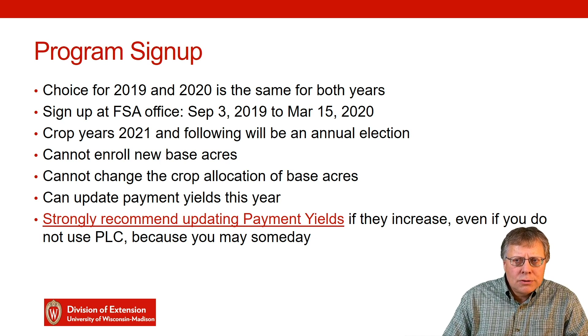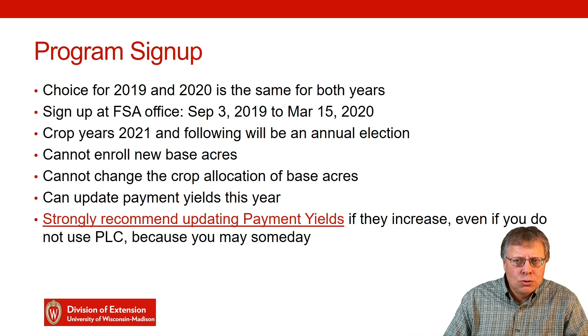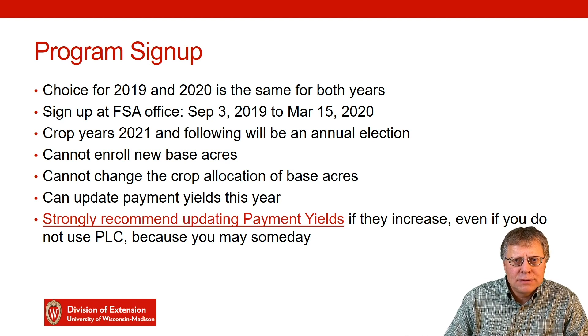Crop years 2021 and following are going to be annual elections. Instead of doing two years at once, each year will be an annual sign-up with its own options to switch each year.